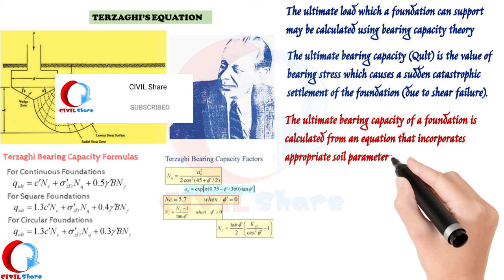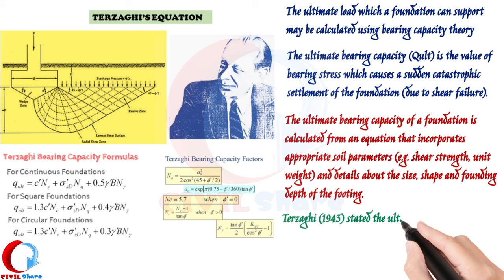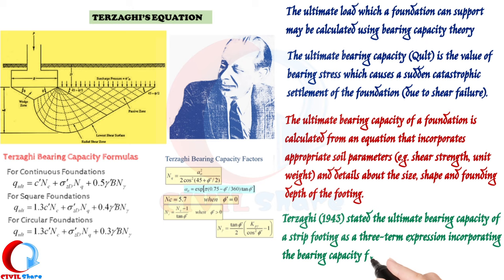The soil parameters include the shear strength, unit weight, and details about the size, shape, and founding depth of the footing. Terzaghi stated the ultimate bearing capacity of a strip footing as a three-term expression incorporating the bearing capacity factors.